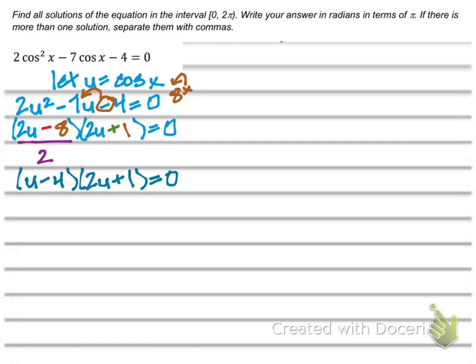We substituted in for cosine so we could see it a little better. You don't have to do that substitution — you can factor with the cosine in there — I just think it gets kind of messy, so it's easier to make that substitution. Now I can continue solving: if u minus 4 equals 0, then u equals positive 4. If 2u plus 1 equals 0, then u equals negative 1 half.